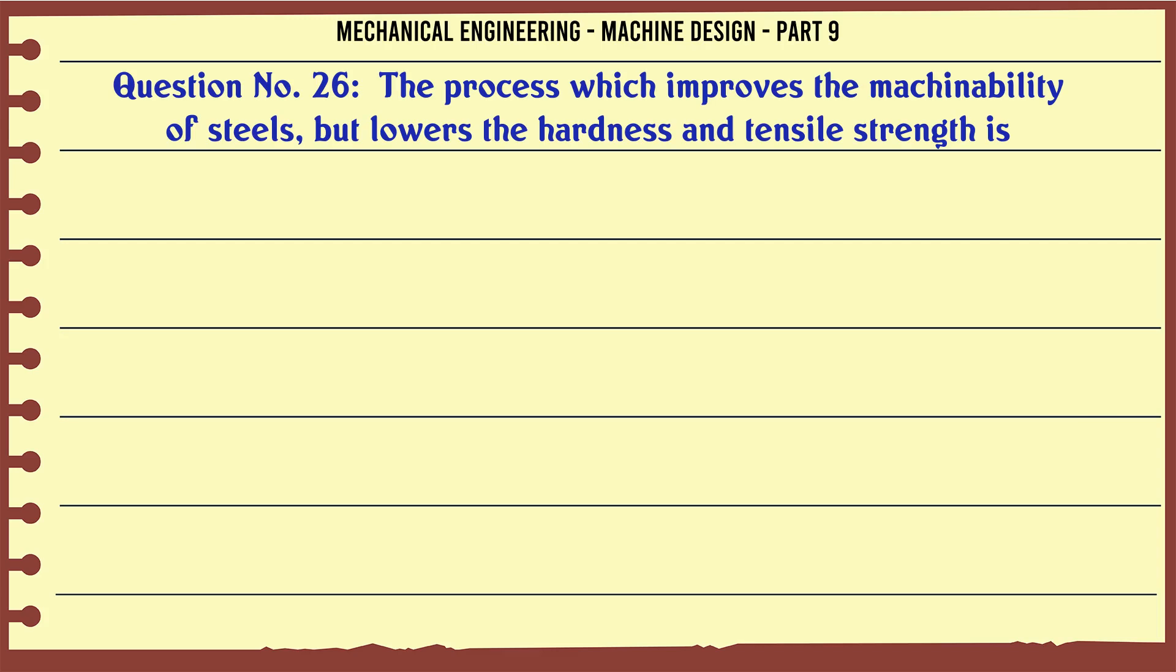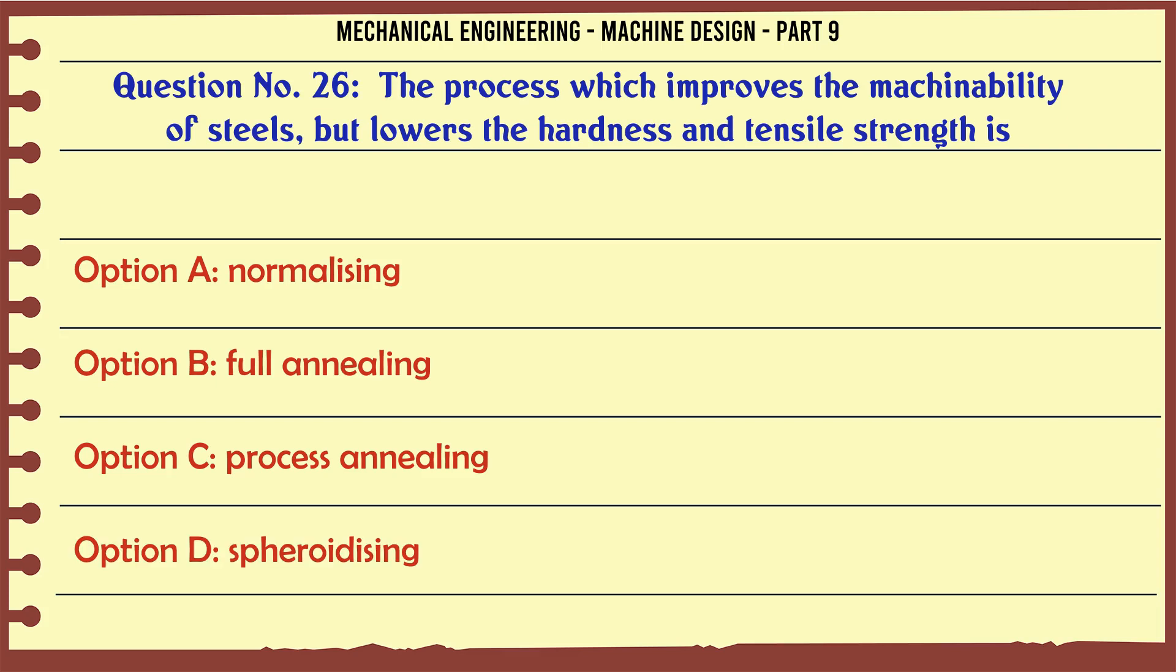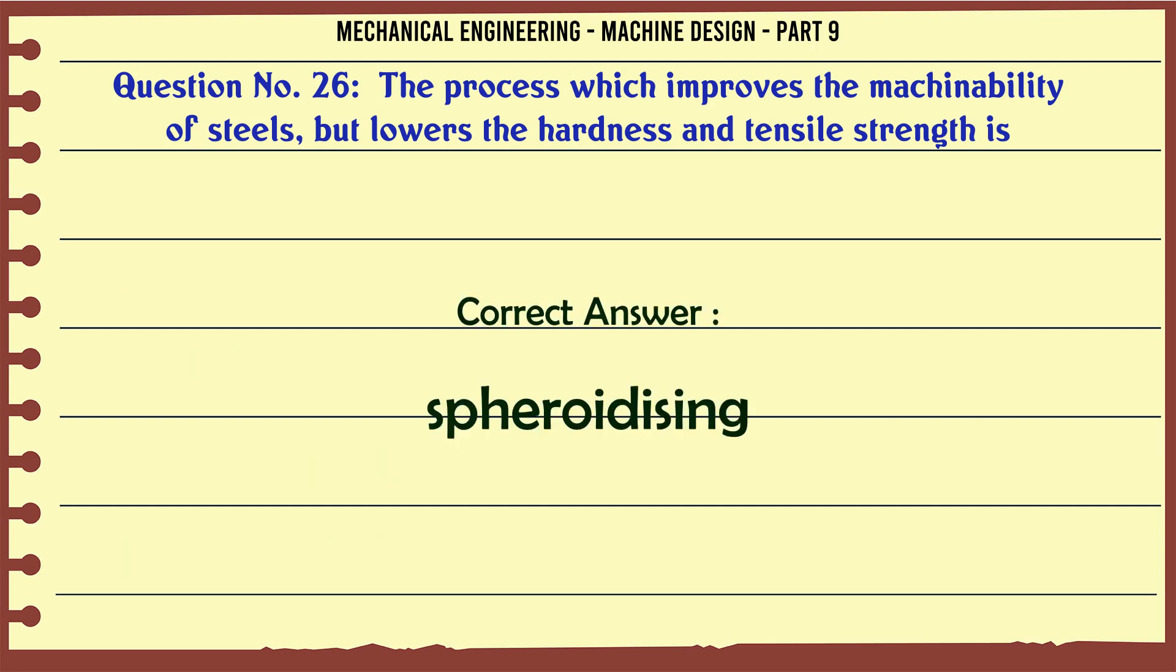The process which improves the machinability of steels but lowers the hardness and tensile strength is: A. Normalizing, B. Full annealing, C. Process annealing, D. Spheroidizing. The correct answer is Spheroidizing.